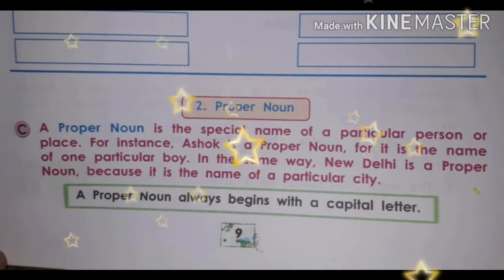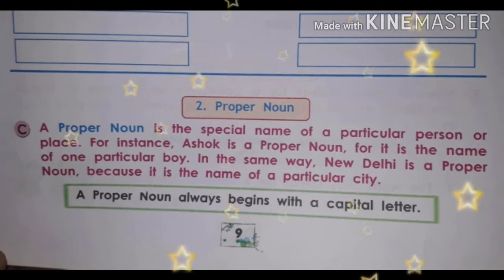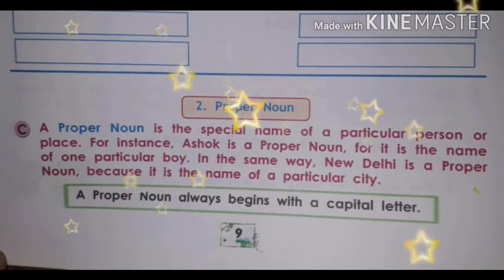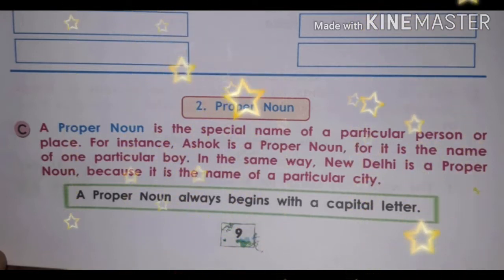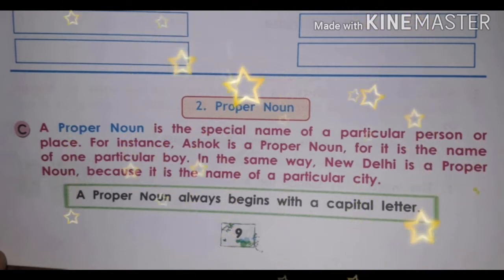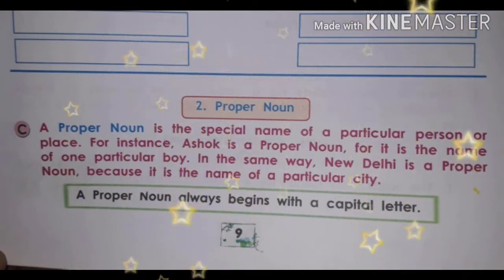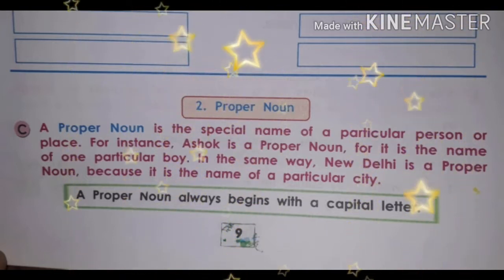What is proper noun? First of all we understand proper noun. A proper noun is the special name of a particular person or place. For instance, 'Asoc' is a proper noun, for it is the name of one particular boy. So whatever name you have, it is a proper noun. In the same way, New Delhi is a proper noun because it is the name of a particular city.